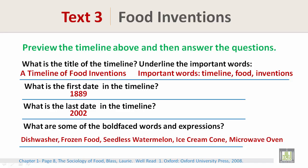What is the title of the timeline? It is 'A Timeline of Food Inventions.' The important words are timeline, food, and inventions. What is the first date in the timeline? 1889. What is the last date? 2002. What are some of the bold-faced words? Bold face means really dark — examples include dishwasher, frozen food, seedless watermelon, ice cream cone, and microwave oven.